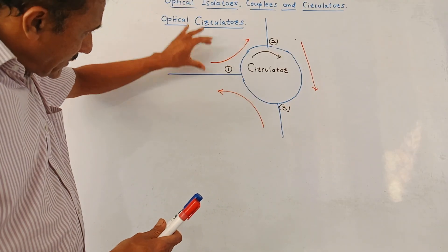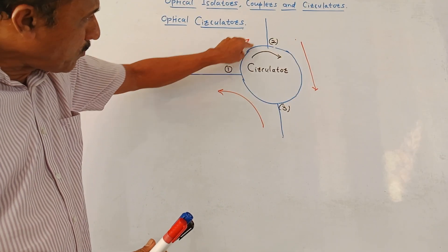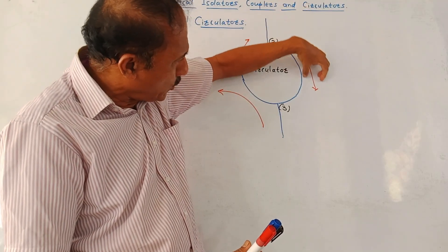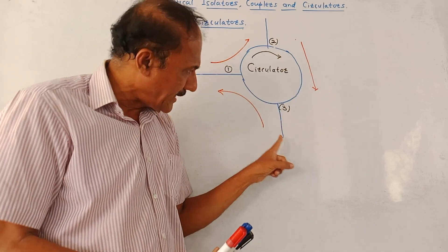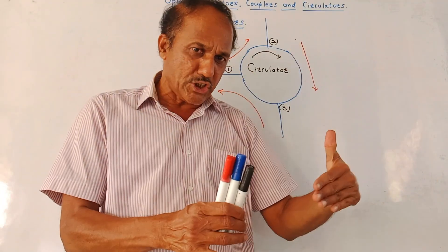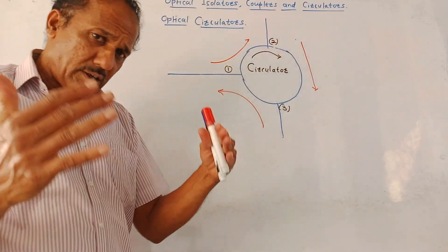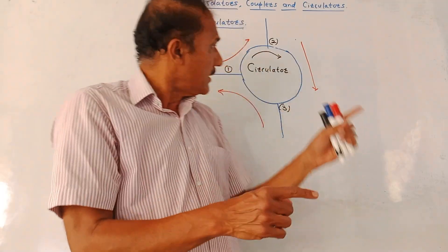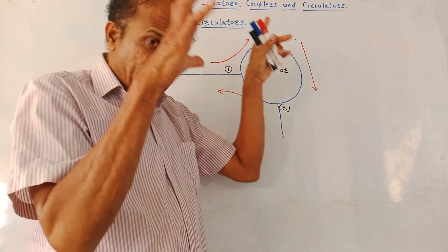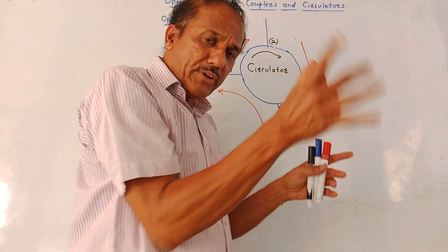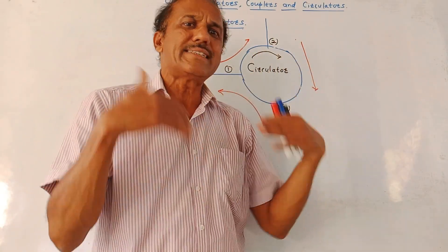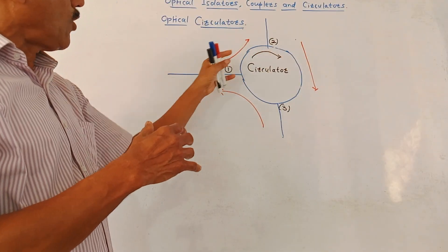If incident power is at port 1, it will be allowed to pass towards port 2. If power is incoming from port 2, it will be allowed to flow to port 3. Similarly, if power is incident at port 3, it will be allowed to flow towards port 1 only. Suppose there are back reflections from port 2 — naturally the reflected light should move in the reverse direction toward port 1. But the circulator does not allow this. The reflected light must move from port 2 to port 3, not to port 1, and this is how port 1 is isolated. This is the basic principle of working of the optical circulator.